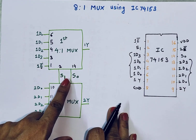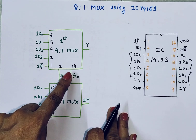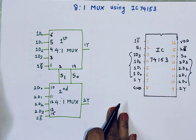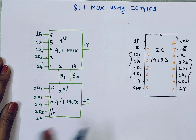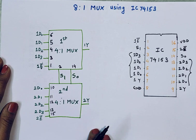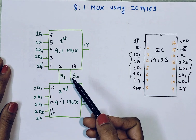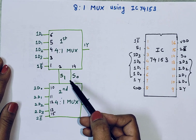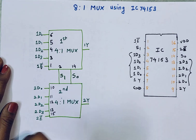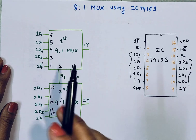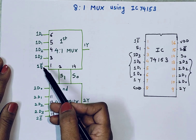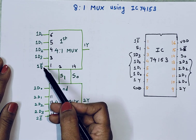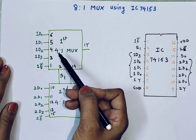The select inputs of both 4-to-1 multiplexers are shorted together. Now, to implement an 8-to-1 multiplexer we need 3 select lines, but we only have S0 and S1 here. So we can make the third select line using the enable pin.